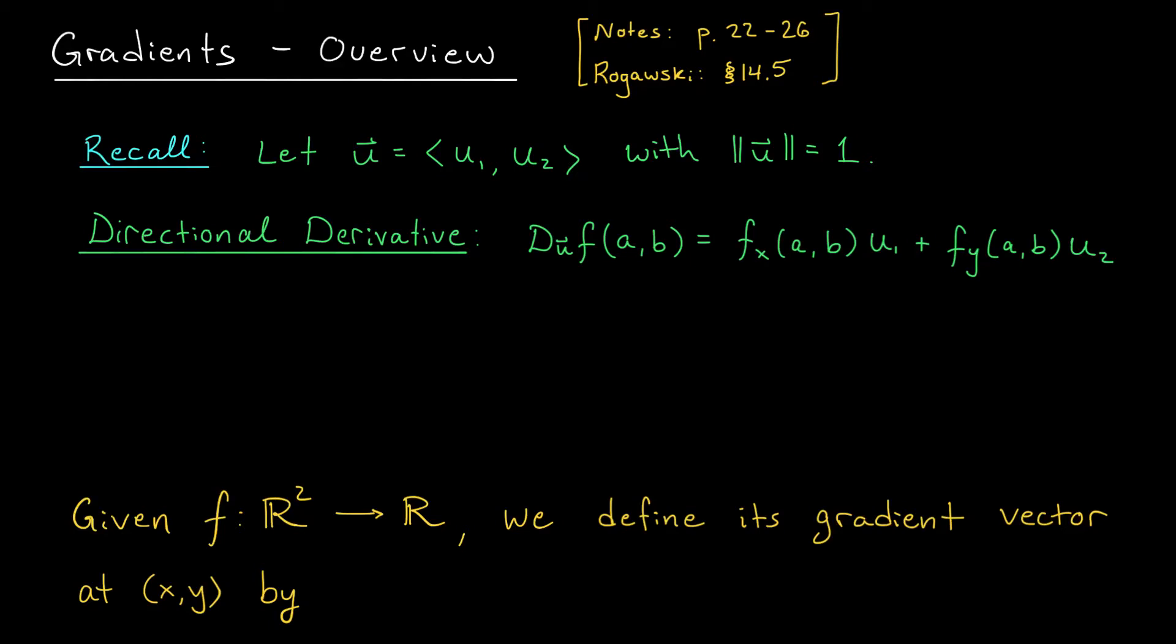Hey there folks, and welcome back. In our last lesson, we introduced the notion of a directional derivative. This was sort of like a partial derivative, right? It measures a rate of change of our function, but now we're no longer restricted to just moving in the x or y directions. Starting at a point AB, we can measure the rate of change in any direction by moving with some unit vector u.